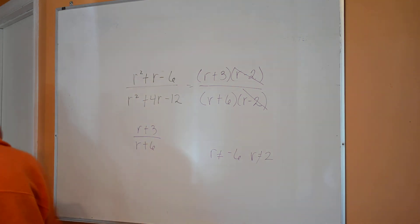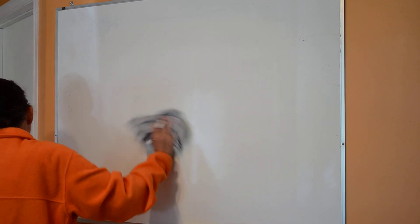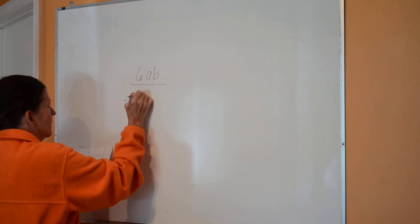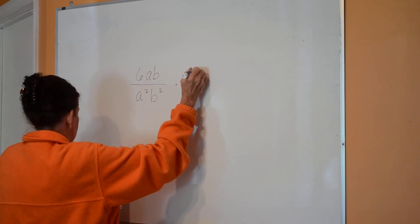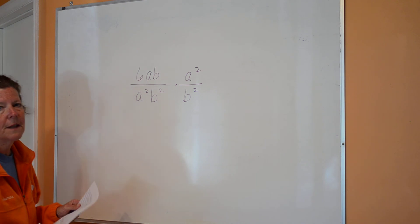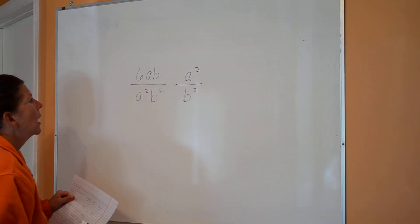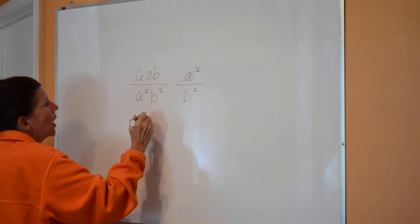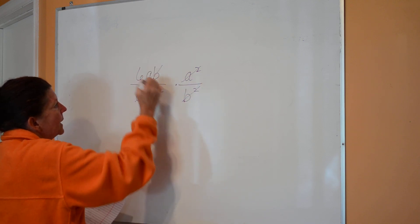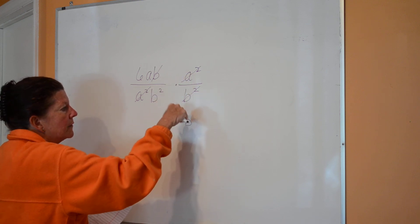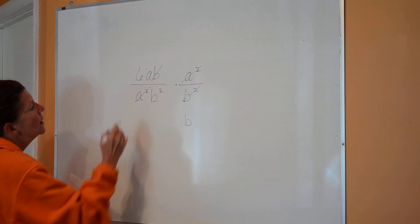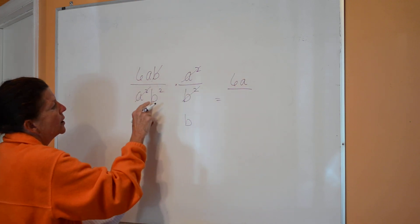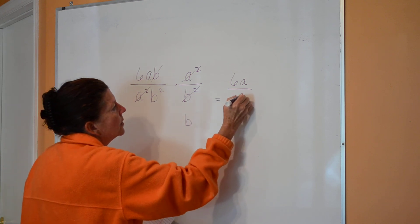Moving on to Section 12.3 — multiplying rational expressions. We started with just monomials. You can multiply straight across first or reduce before multiplying. You have a² and a², then ab² and ab. On top I'm left with 6a, and on the bottom I'm left with b² times b, or b cubed.